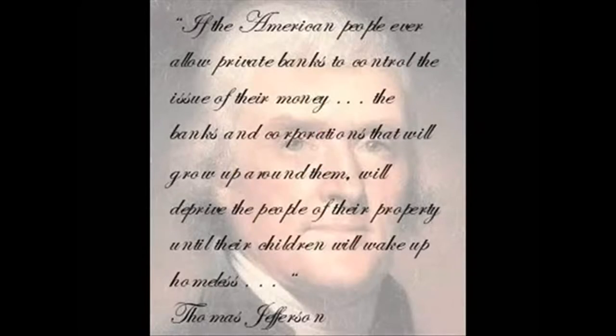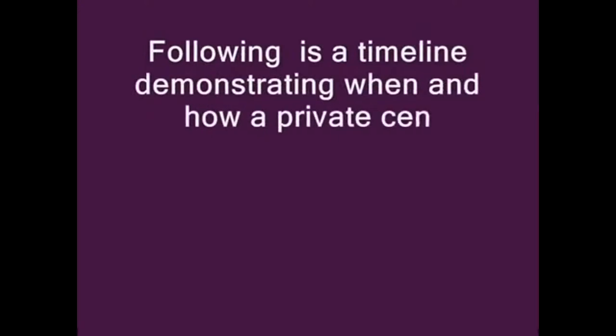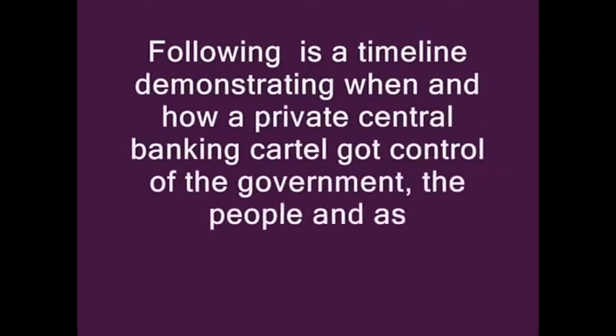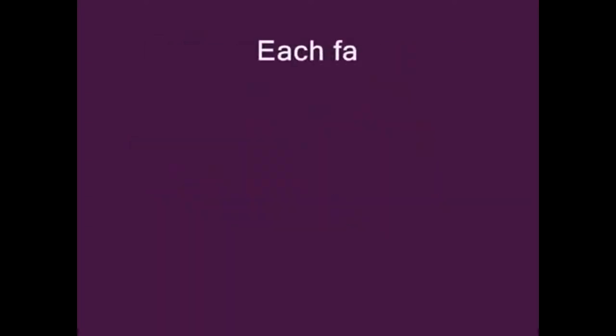If the American people ever allow private banks to control the issue of their money, the banks and corporations that will grow up around them will deprive the people of their property until their children will wake up homeless. Following is a timeline demonstrating when and how a private central banking cartel got control of the government, the people, and the assets of the United States. Each fact is supported by official sources. Source documents are available at www.anticorruptionsociety.com under the tab Source Documents.